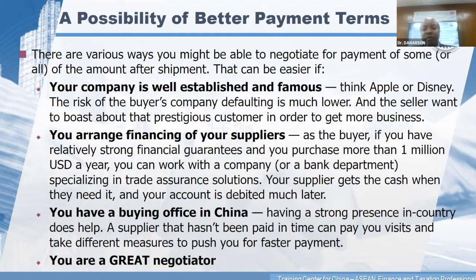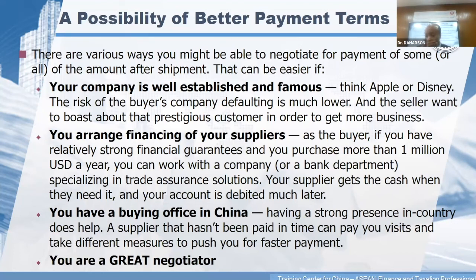Better terms are easier to negotiate if your company is well-established and famous. If you are Apple or Disney, suppliers will treat you differently. Prove your company's reputation through documentation, website references, and by giving references — 'call this person and they will vouch for us.' You can also work through an agency in China that knows companies worldwide. You pay a small fee and the agency can help establish your company's reputation to the supplier.